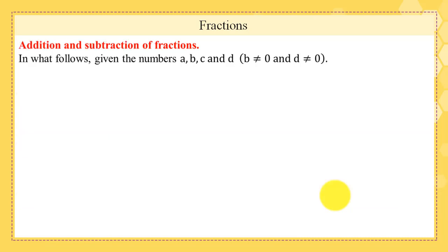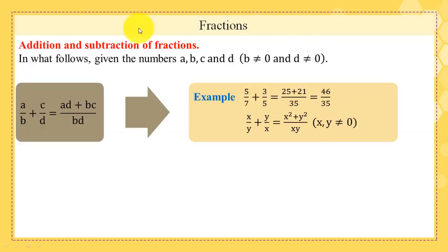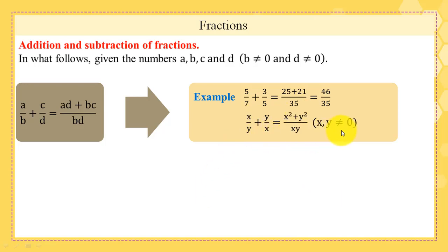Now, addition and subtraction of fractions. First, addition: a/b + c/d = (ad + bc)/(bd). Example: 5/7 + 3/5 = (5×5 + 3×7)/(7×5) = (25 + 21)/35 = 46/35. Also, x/y + y/x (where x and y are non-zero) = (x² + y²)/(xy).